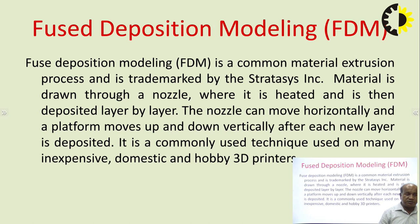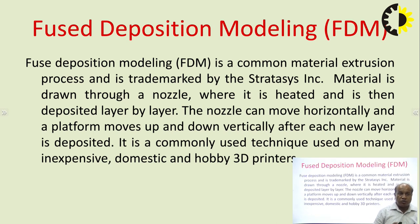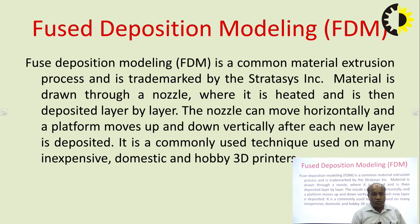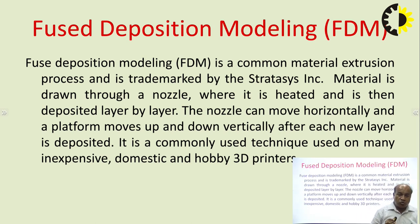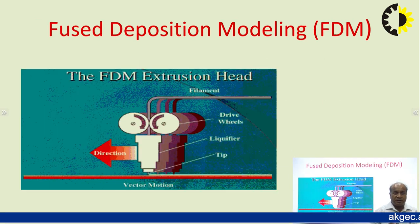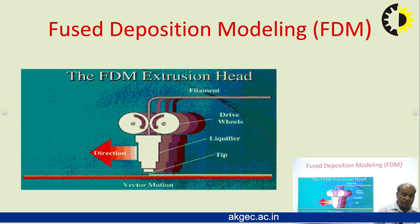The next technology is Fused Deposition Modeling, also known as FDM. FDM is a common material extrusion process trademarked by Stratasys. Material is drawn through a nozzle where it is heated and deposited layer by layer. The nozzle moves horizontally while the platform moves vertically. It is commonly used for inexpensive domestic and hobby 3D printers. The material filament is generally 1.75 mm or 3 mm in diameter, depending on the machine.